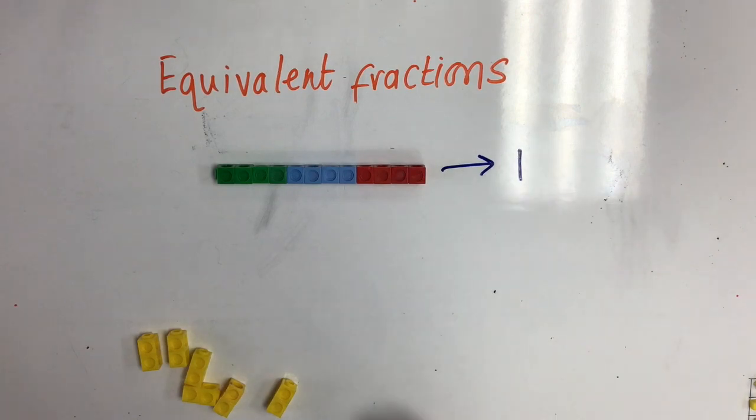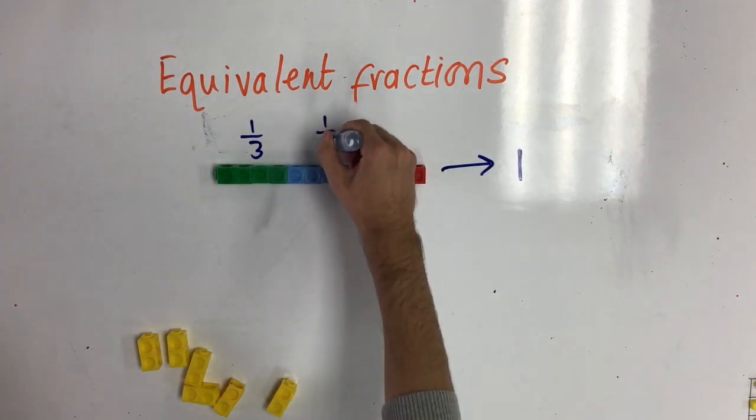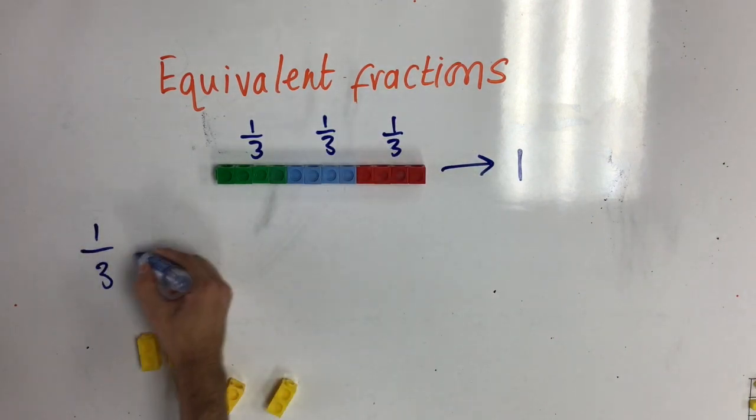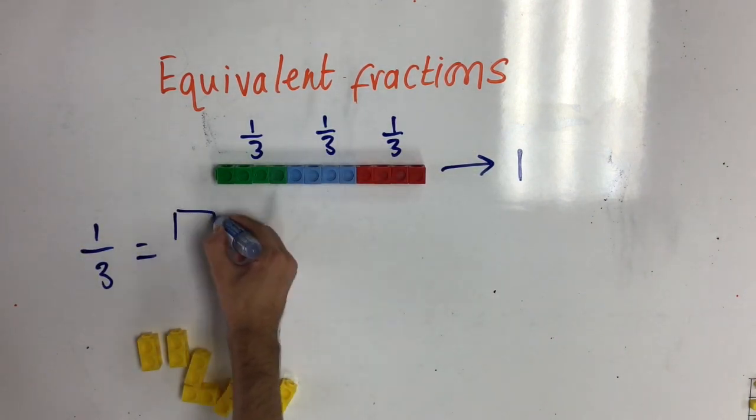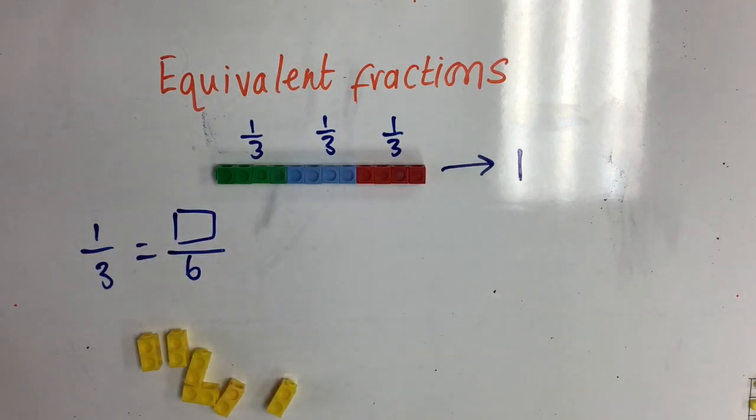Here you can see I have one whole, and I've split that into thirds. I want to find out how many sixths one third is equivalent to. So, I need to split my amount into sixths.